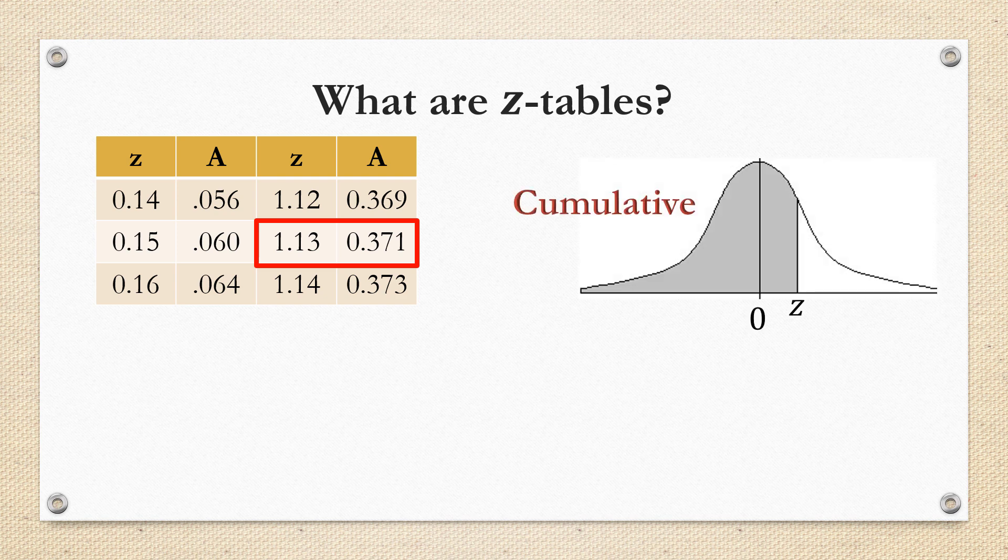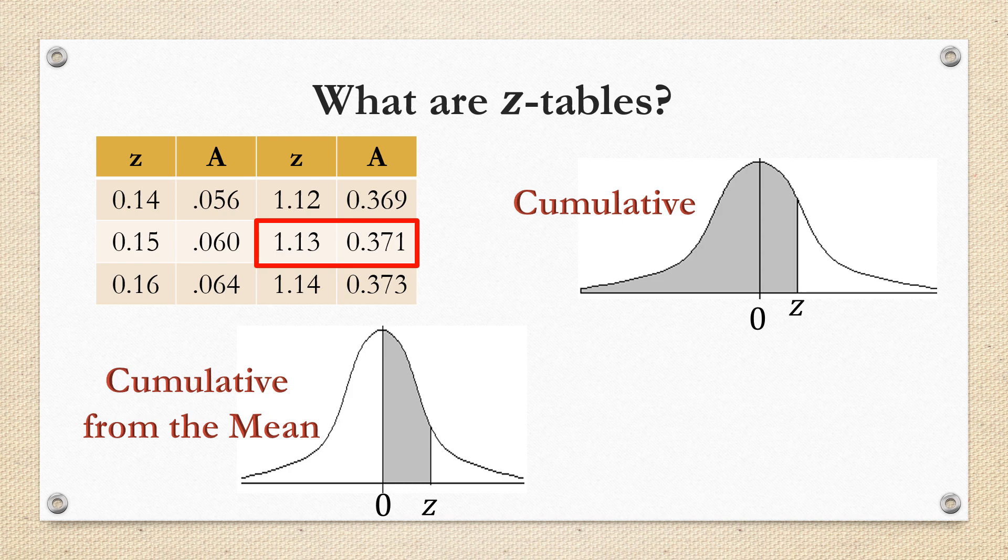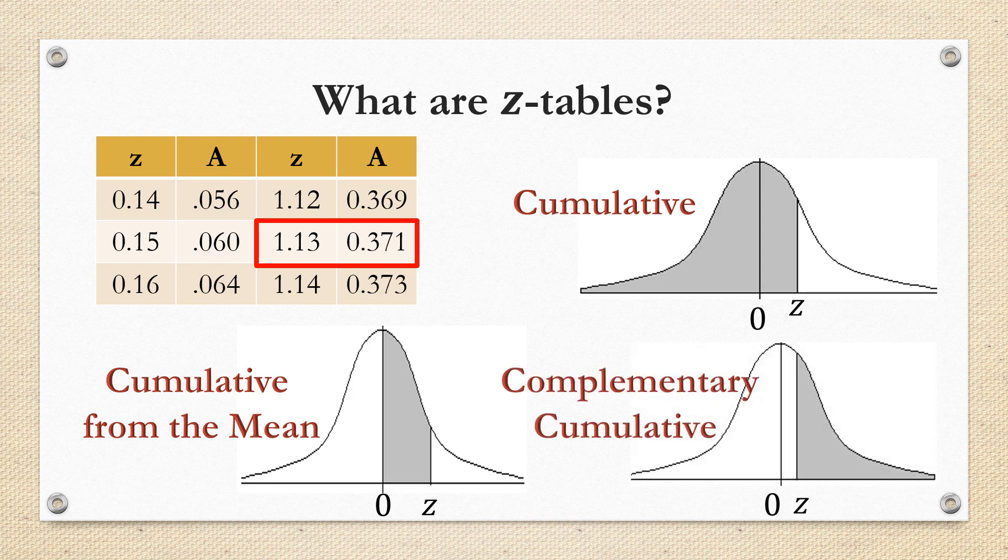Well, if we're looking at a cumulative z-table, that would represent all the area to the left of z. But if we're looking at a z-table that's cumulative from the mean, it's going to be the area between 0 and z. And if we're looking at a z-table that's complementary cumulative, it's going to be the area to the right of z. So it's very important to know which one you're looking at.